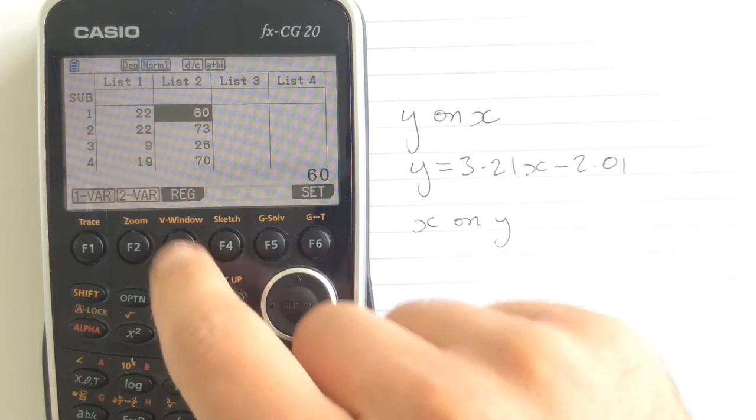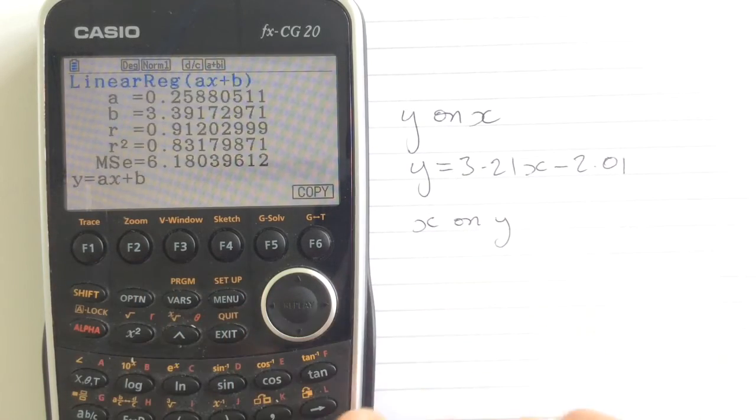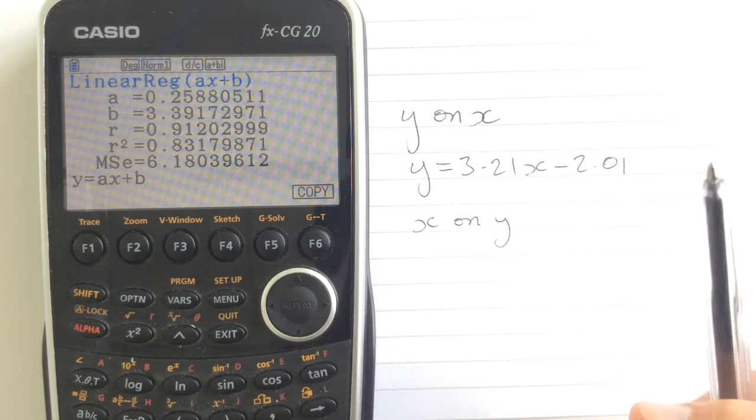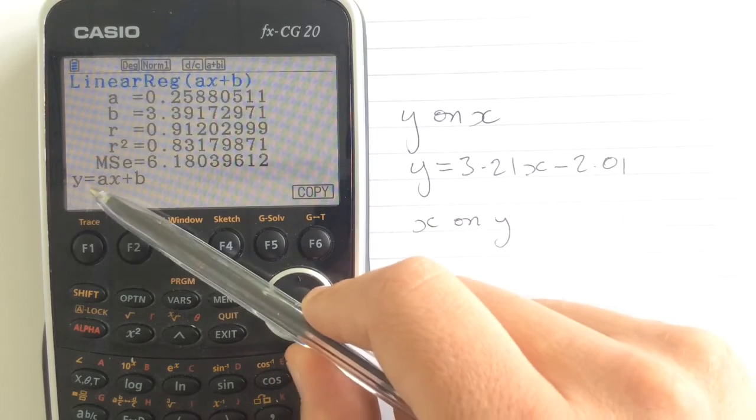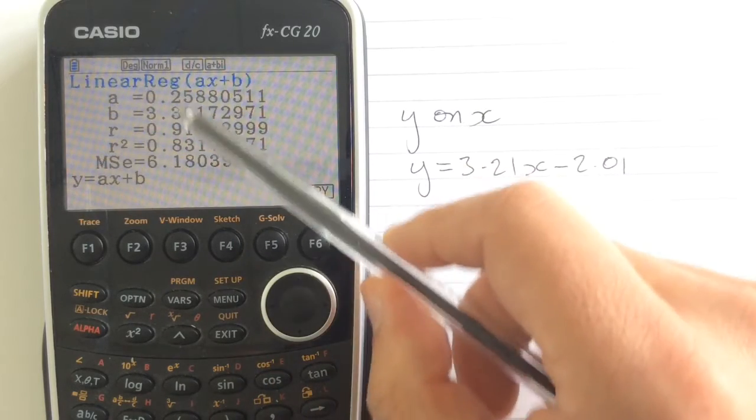Come out of there and now do regression. We've got these as our values. And what it says of course is y is equal to ax plus b, and we can take those values from there.